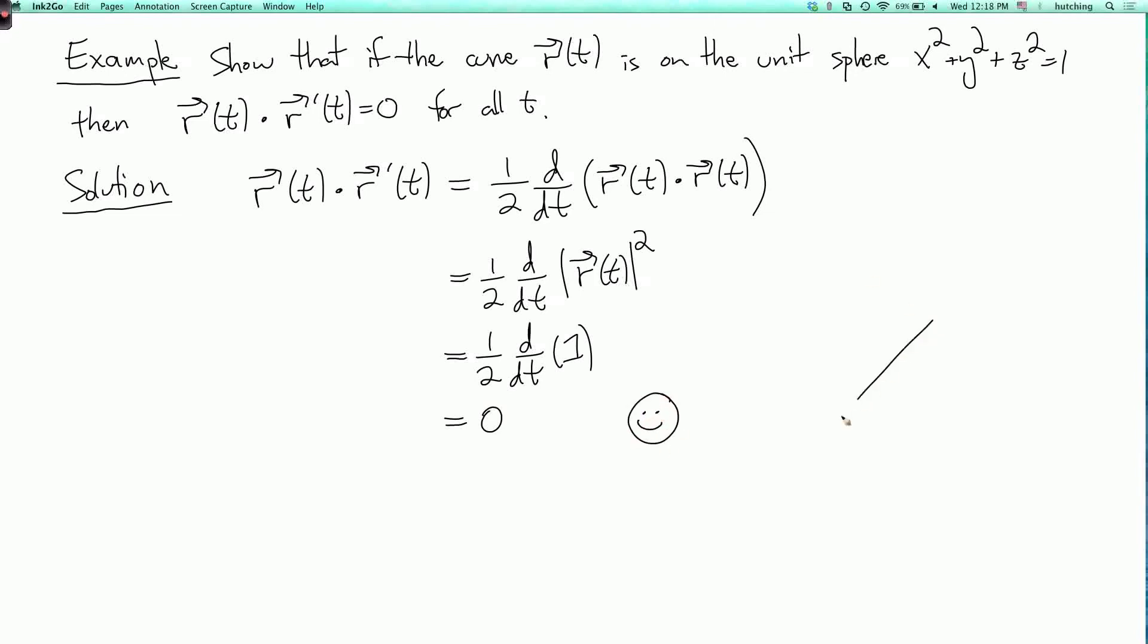So the picture, so here's the unit sphere, and our curve r of t is wandering around the sphere. And at any point here, if this is the point r of t, so remember r of t is identified with a vector from the origin to that point.